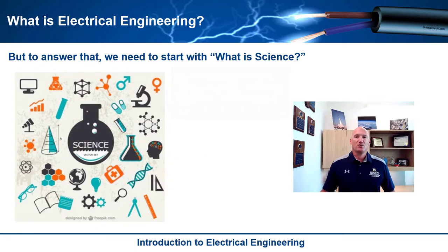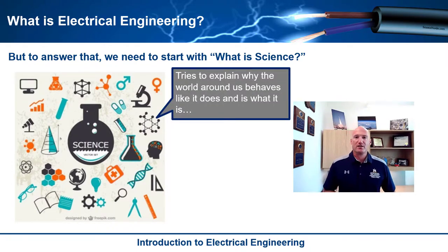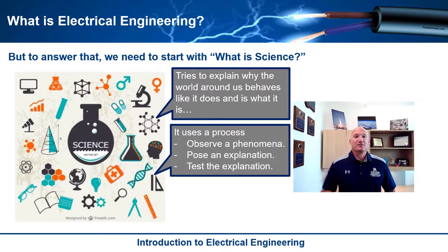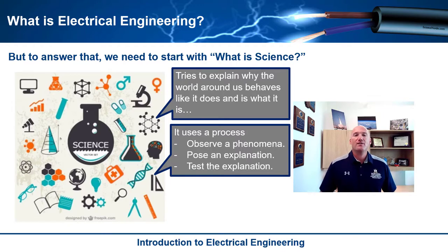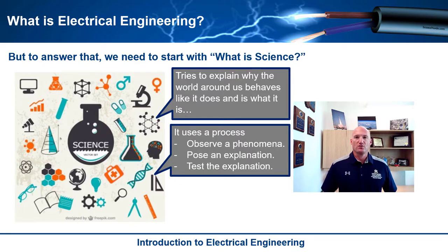If you look at science, what scientists do is they try to explain the world around us — why is the world doing what it's doing, why is it the way it is. Scientists have come up with the scientific process: they make observations about some phenomena, propose an explanation, test that explanation, and if the data is repeatable they make conclusions about how the world is working.